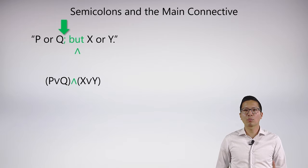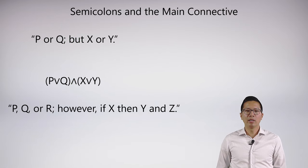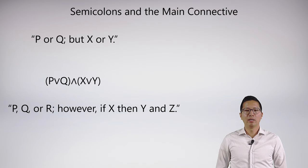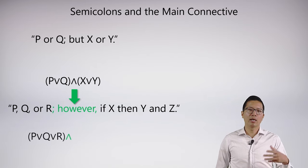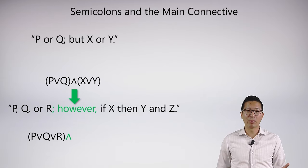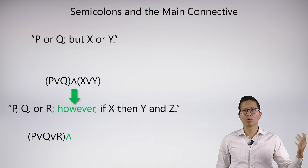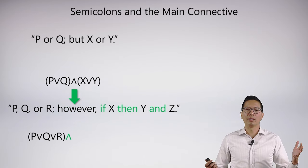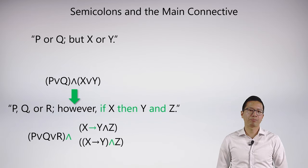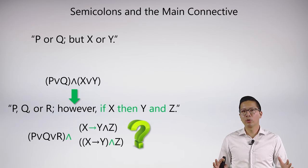But keep in mind, this doesn't solve all our problems. In this example — 'P, Q, or R; however, if X, then Y and Z' — the semicolon does tell me what the main connective of this statement is, and that's the 'and.' Then I can symbolize 'P, Q, or R' very easily, but unfortunately the right side is ambiguous — just like the previous example. So it's actually unclear which is the right answer here. So ambiguous sentences are a bit annoying. You can clarify them with commas, but in general I would never ask you something ambiguous without telling you that it's ambiguous.